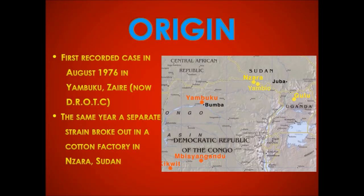In August of 1976, the first case of Ebola was reported in Yambuku, Zaire, now known as the Democratic Republic of the Congo. In November of the same year, a separate incidence occurred in Nzara, Sudan, among workers in a cotton factory. The outbreak in Zaire killed 280 of the 318 people it infected, a rate of 88%. The Sudanese outbreak killed 151 of the 284 infected, 53%.